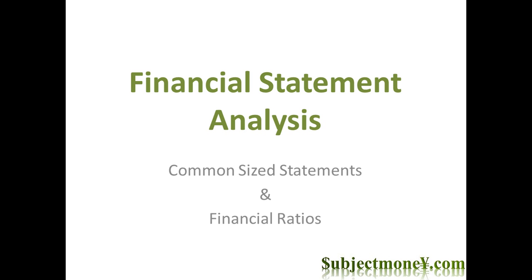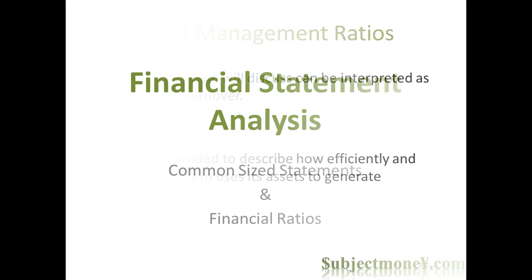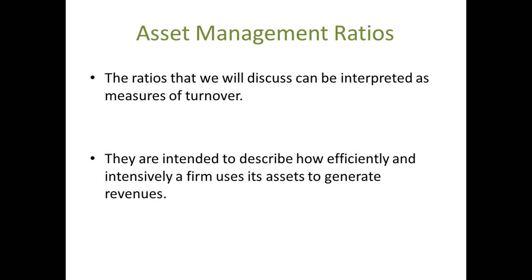Asset Management or Turnover Measures. Now we will cover how to measure the efficiency of a company. These ratios are often called Asset Management or Utilization Ratios. The ratios that we will discuss can be interpreted as measures of turnover. They are intended to describe how efficiently a firm uses its assets to generate revenues.